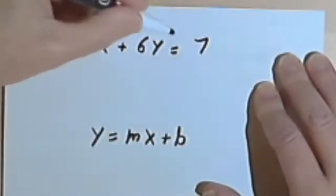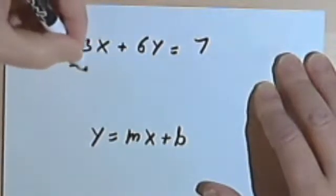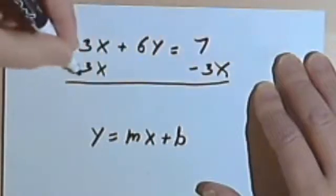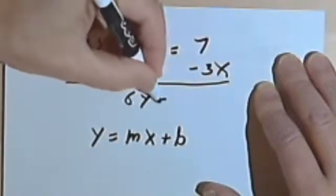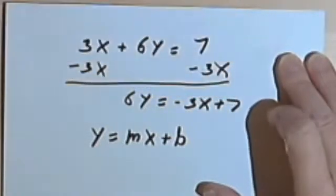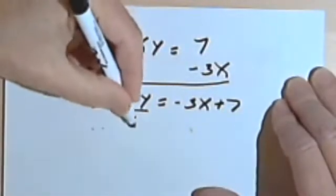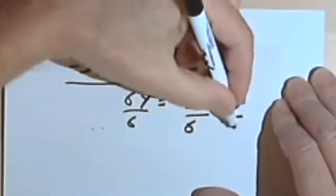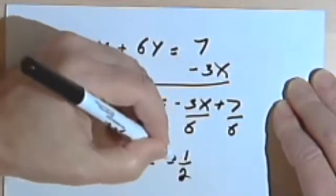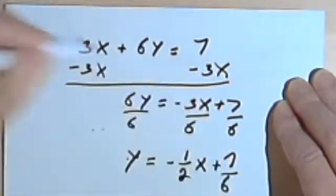And in fact, we can take this one in standard form and turn it into slope-intercept. All I'll do is subtract 3x from both sides. That's going to give me 6y equals negative 3x plus 7. I'll divide everything by 6, and I get y equals negative one-half x plus 7 over 6.